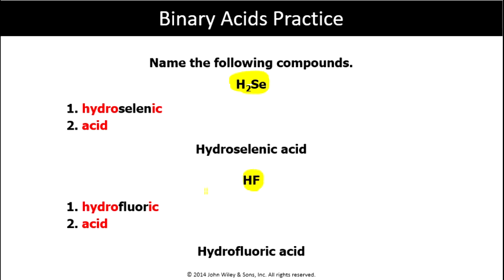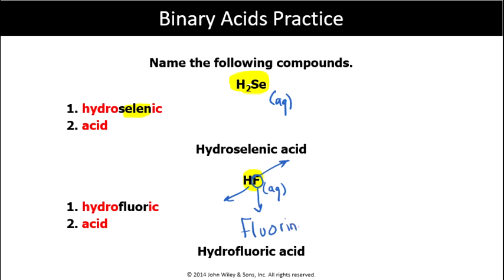I may ask you to write the name of these compounds: H2Se and HF. Pause this video and check your answer. For H2Se: hydro at the beginning, -ic acid at the end, and Se is selenide — we add to the root — so we call that hydroselenic acid. For HF: hydro at the beginning, -ic acid at the end, F is fluorine — we add to the root — so we call that hydrofluoric acid.